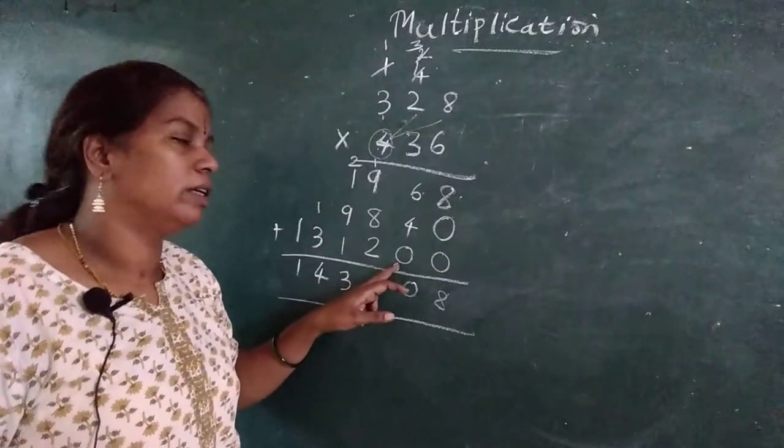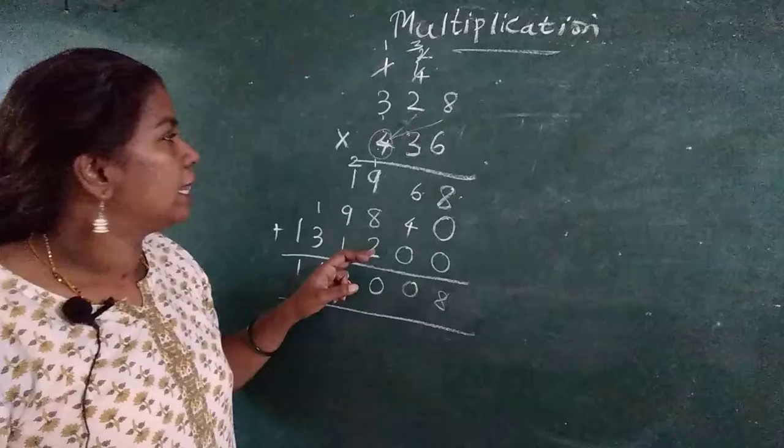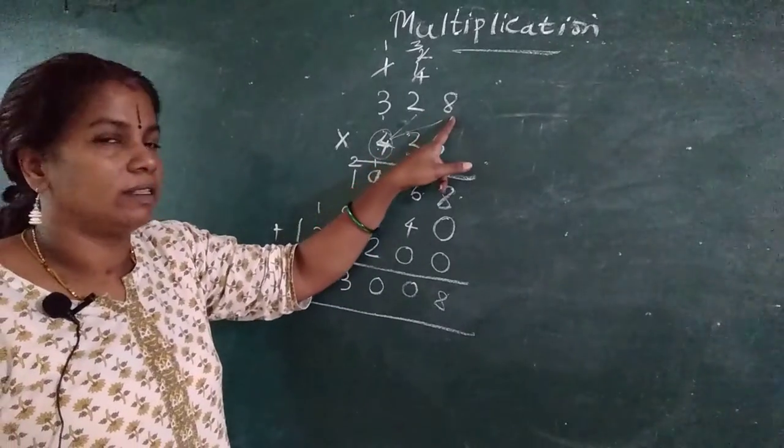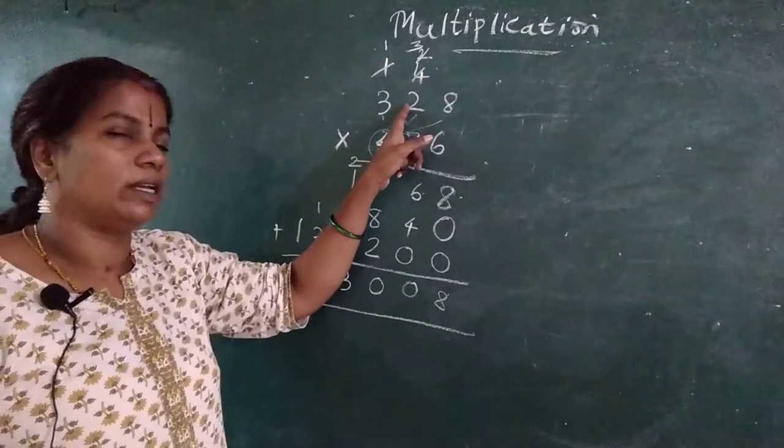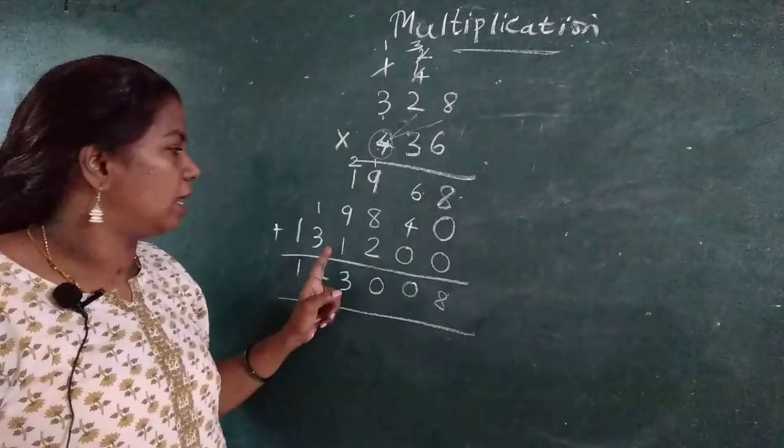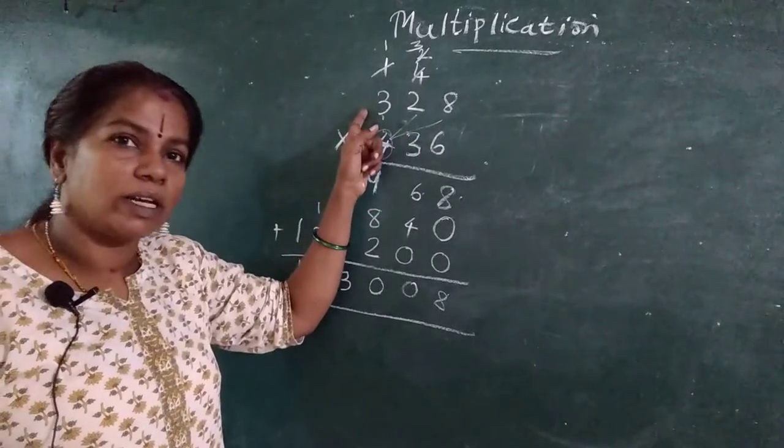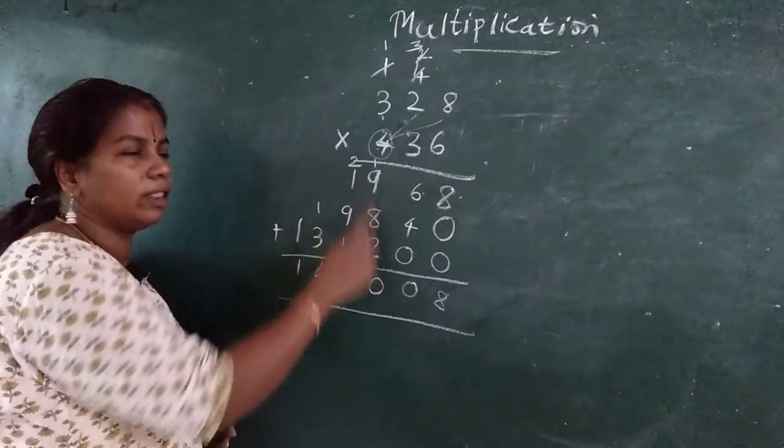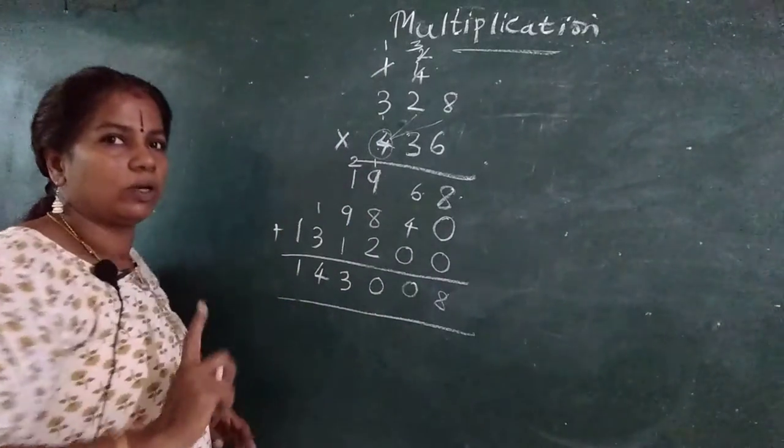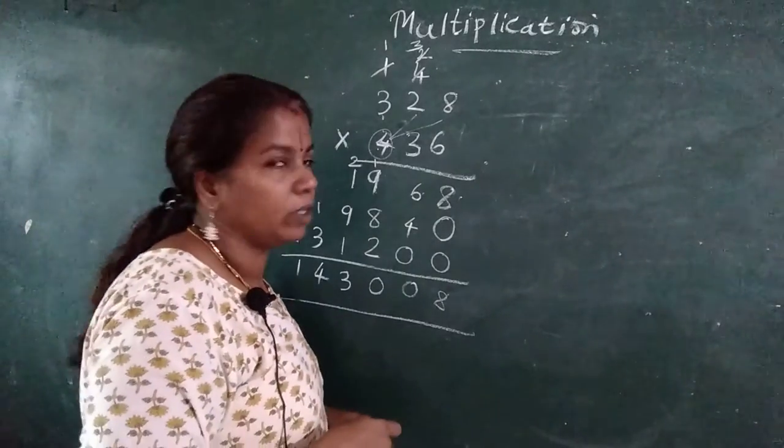Then for hundred number. 0, 0, 2, 0 you put. Then 4, 8's are 32. 3 here, 4 here. 4, 2's are 8, plus 3, 11. 1 here. 4, 3's are 12, plus 1, 13. Then I added all the numbers. Got it? One more sum I will show for you.